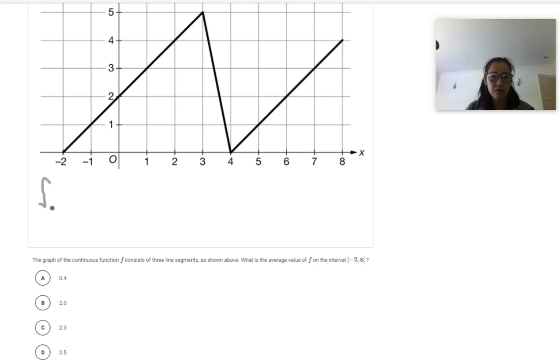So we do the integral from negative two to eight of f of x dx. This is a negative two, by the way. So and then we divide all that by eight minus negative two.